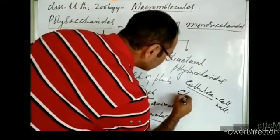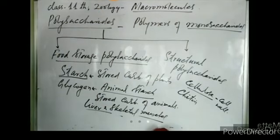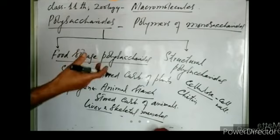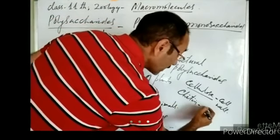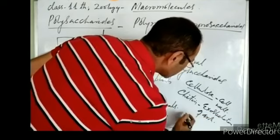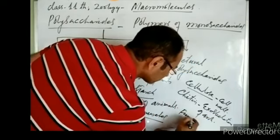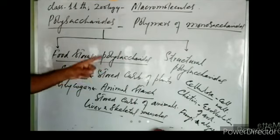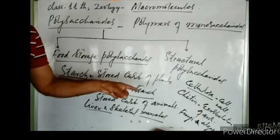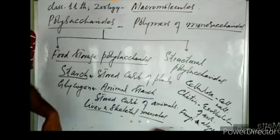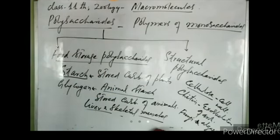Similarly, chitin is involved in the formation of the exoskeleton of arthropods. Chitin is also the main component of the cell wall of some fungi and some algae. So chitin is found in the exoskeleton of arthropods and in the cell walls of fungi and algae — that is why we also call chitin a structural polysaccharide.